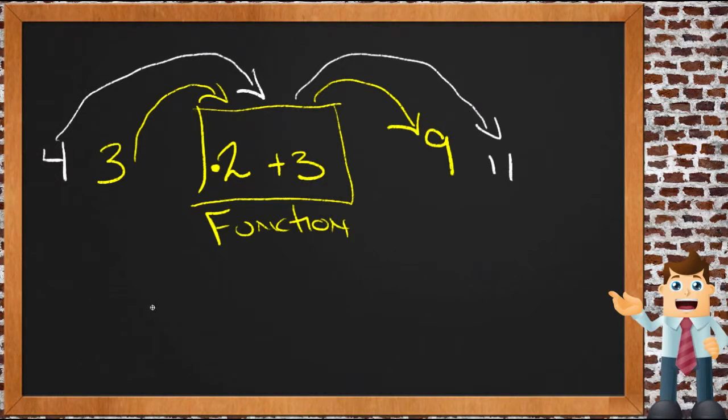This function would look like this in algebra notation. We would say 2 times x plus 3 equals y. Take the number you put in, multiply it by 2, and add 3, and that's the same thing as the number you're going to get out. So 3 times 2 plus 3 is the same thing as 9. 4 times 2 plus 3 is the same thing as 11.